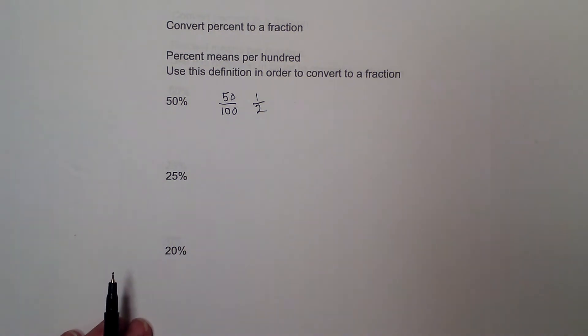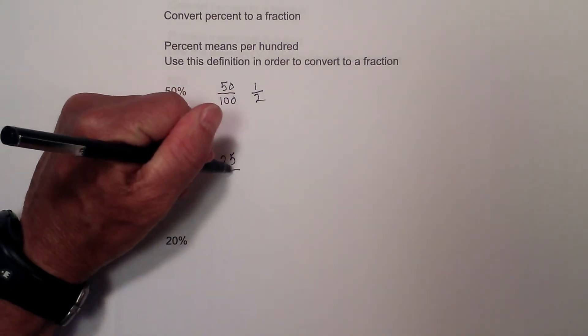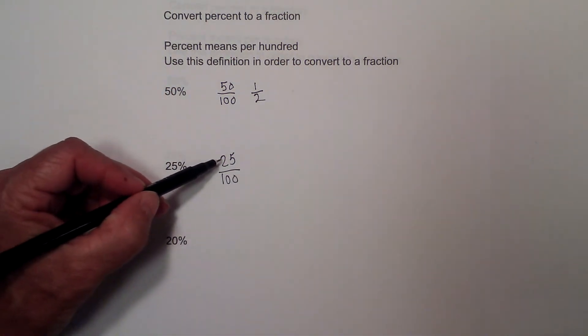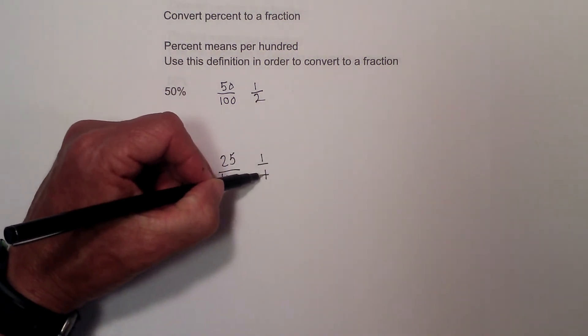25%, same thing. Just take 25 and write it over 100 and then I can reduce that. I know 25 goes into 100 four times so that could be one fourth.